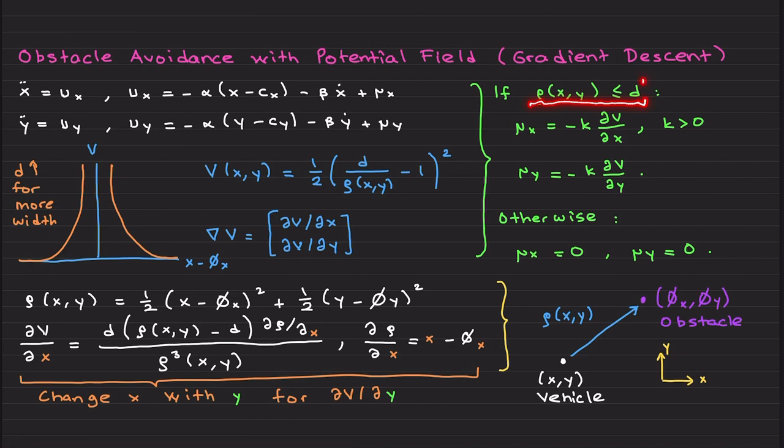If you are sufficiently close to the obstacle, which is characterized by this d term, if your distance is less than d, then these functions μx and μy are activated. If you are away from the obstacle, basically μx and μy are zero.